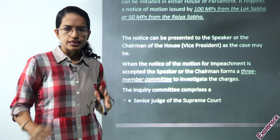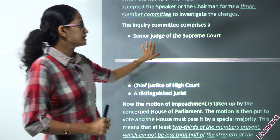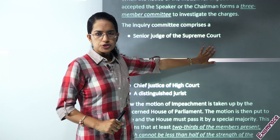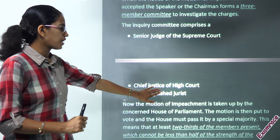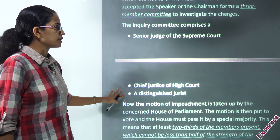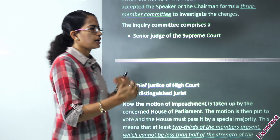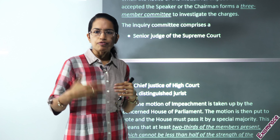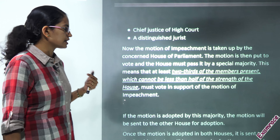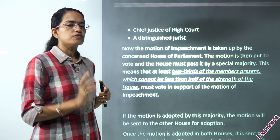Once decided, a three-member committee is formed. The members are: a senior judge from the Supreme Court, the Chief Justice of a High Court, and a distinguished jurist. These three people comprise the committee. The committee works around, finds the charges and allegations, and finally decides whether the matter should be brought into the house.